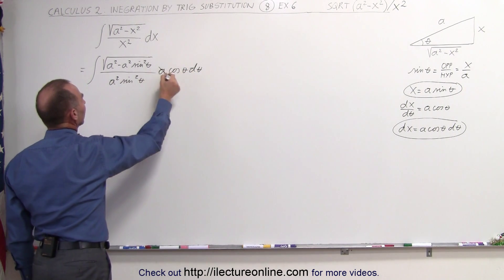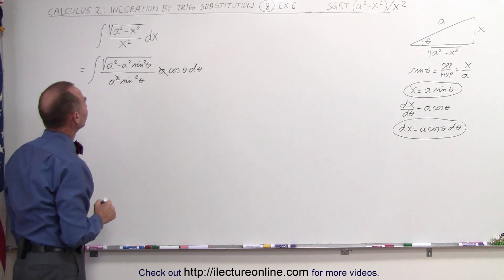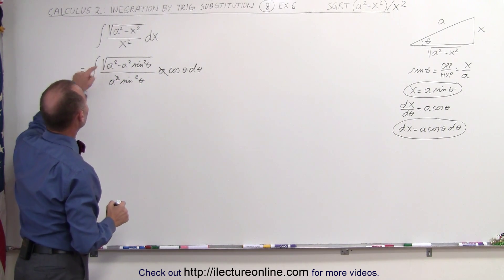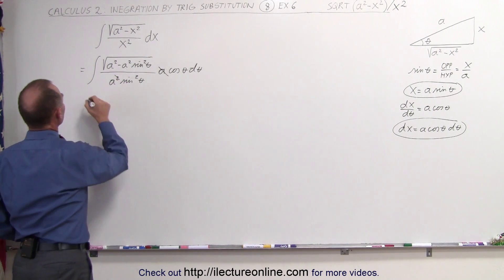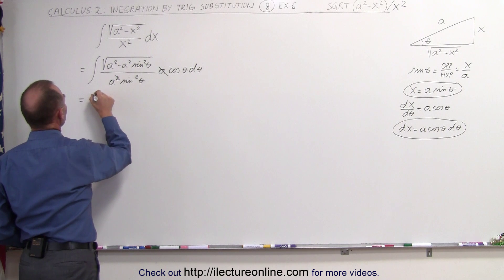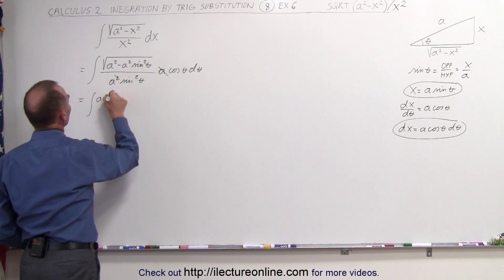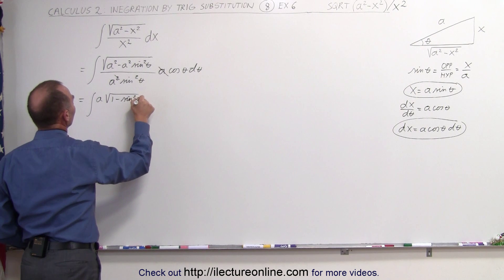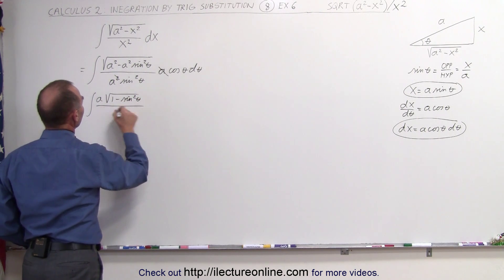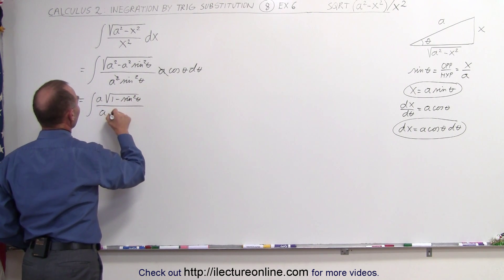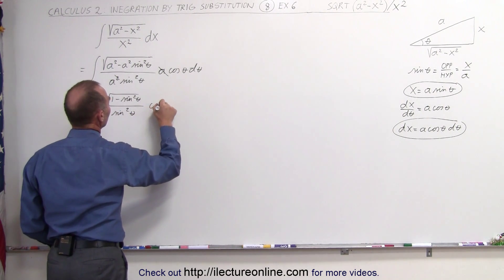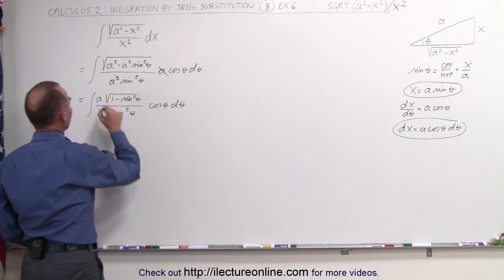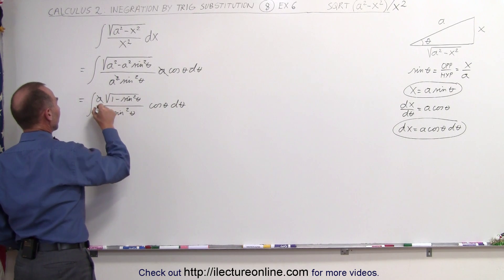This a can cancel out one of these a's. Now let's factor out an a in the numerator. This now becomes equal to the integral of a times the square root of 1 minus the sine squared of theta, divided by a squared times the sine squared of theta, and this is the cosine of theta times d theta. And now this a cancels out this a.